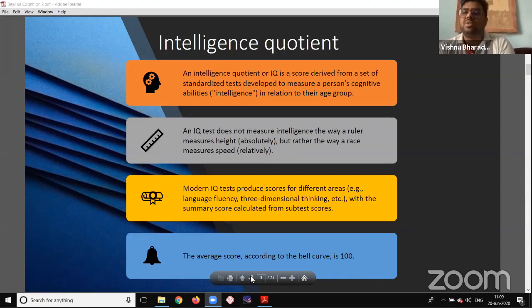I want you to understand what is intelligence quotient. IQ is a set of standardized tests developed to measure a person's cognitive ability in relation to their age group. This is a very relative phenomena and relative test. IQ does not measure intelligence like how a ruler measures height, but rather like how a race measures speed. As our academic system, we are very focused upon intelligence quotient of a person. Can we have the next slide?